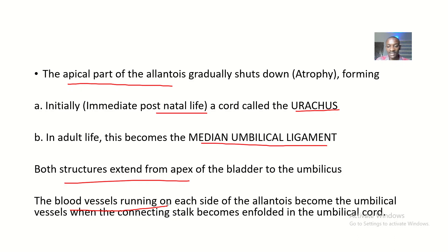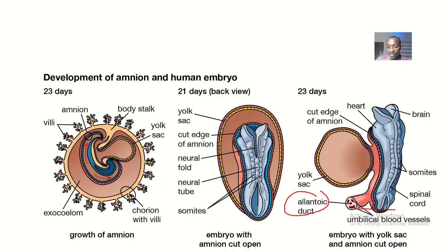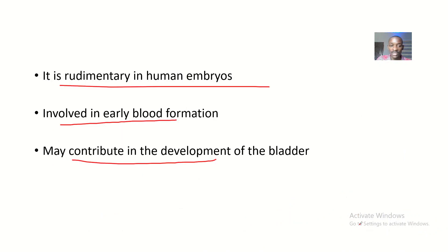The blood vessels running on each side of the Allantois become the umbilical vessels when the connecting stalk becomes enfolded in the umbilical cord. You can see these blood vessels running by the sides of the Allantois, and later in development these blood vessels become the umbilical blood vessels.